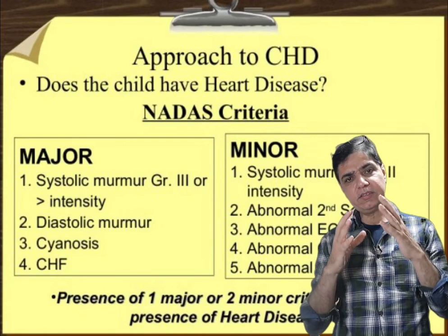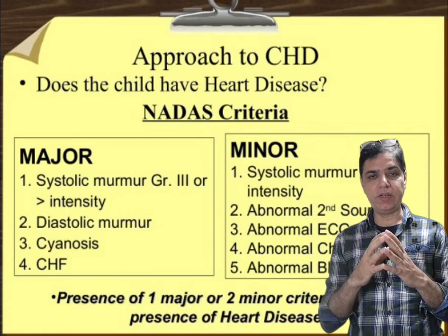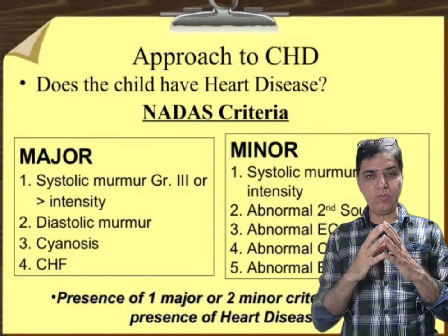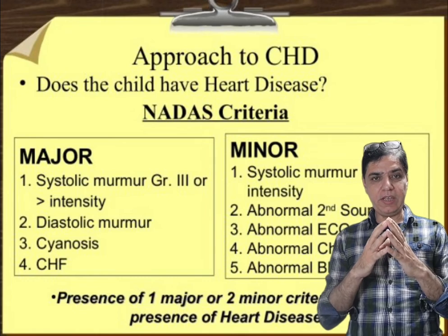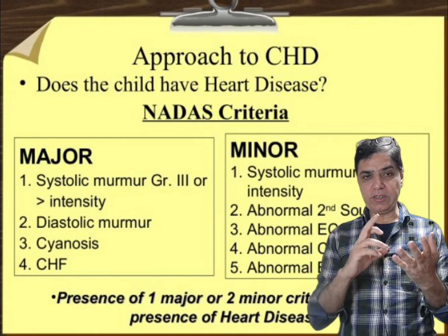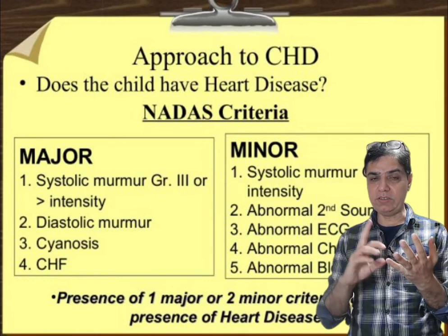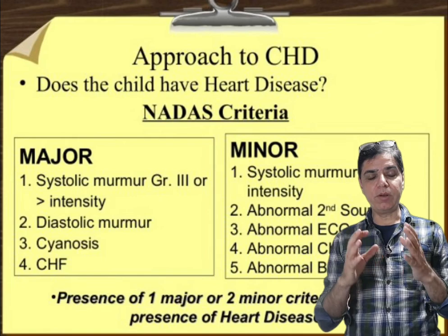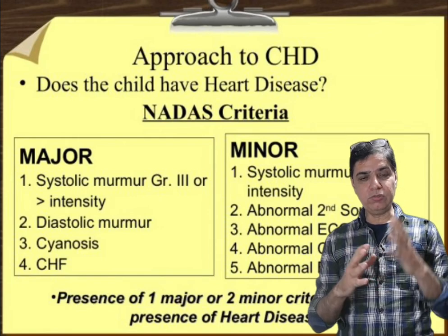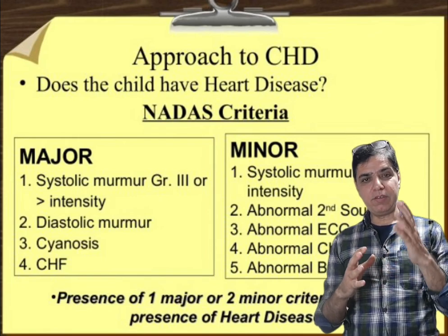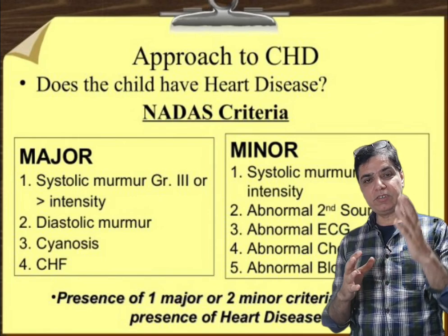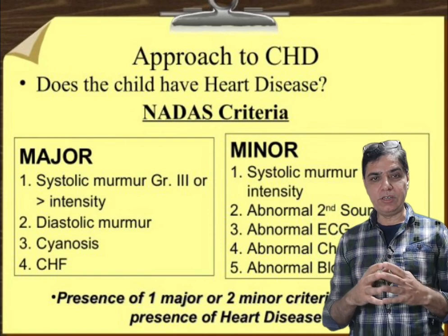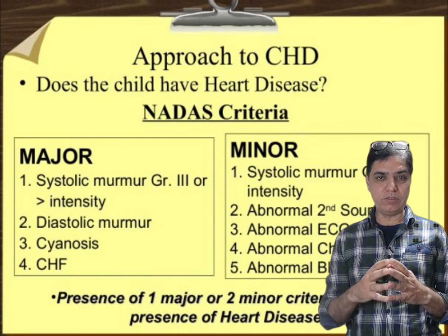The second major criterion is any diastolic murmur, irrespective of its intensity — whether it's grade 1/6 or 6/6. A diastolic murmur is always pathologic. So if a diastolic murmur is present, it satisfies the major criteria for the NADA screening tool for the presence of heart disease.